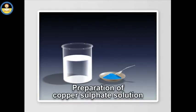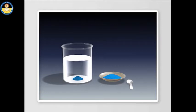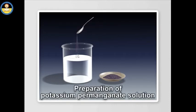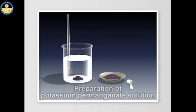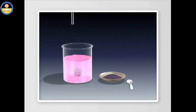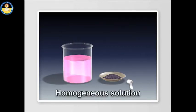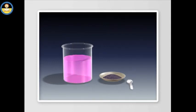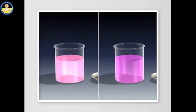We take some water in a beaker and dissolve some amount of copper sulphate in it and observe what happens. We find that the solution becomes light blue in colour, which is uniform throughout. The same happens when we dissolve crystals of potassium permanganate in water — the solution turns purple in colour, and this purple colour is uniform throughout the solution, meaning it is a homogeneous solution. If we add double the amount of potassium permanganate, the intensity of the purple colour increases.